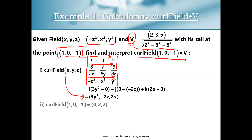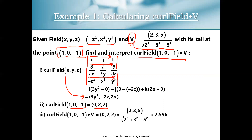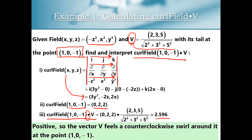Finally, we take the dot product of curl F at (1, 0, −1) — which is (0, 2, 2) — with our given unit vector V (normalized from (2, 3, 5)), and we get a positive number: approximately 2.596. Since that number is positive, vector V feels a counterclockwise swirl at the point (1, 0, −1). Our vector field is delivering a counterclockwise swirl to V at that point.